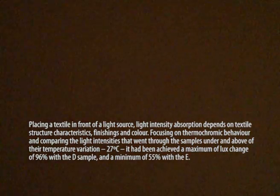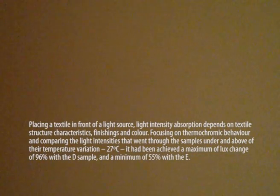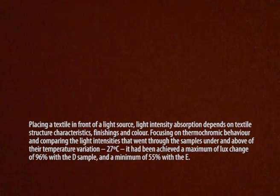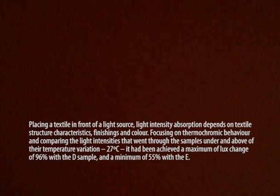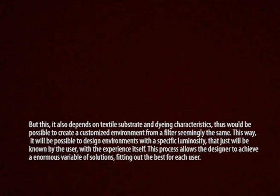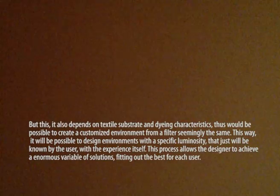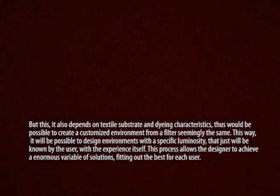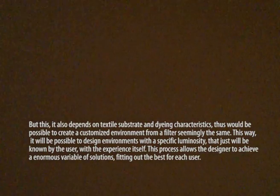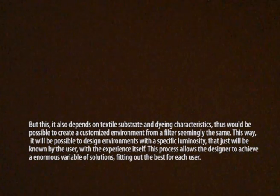Focusing on thermochromic behavior and comparing the light intensities that went through the samples under and above their temperature variation of 27 degrees, a maximum light change of 96% was achieved with one sample and a minimum of 55% with sample E. This also depends on textile substrate and dyeing characteristics. This would make it possible to create a customized environment from a filter that appears seemingly the same, allowing designers to design environments with a specific luminosity that would only be known by the user through the experience itself.